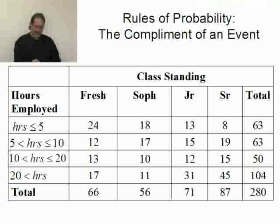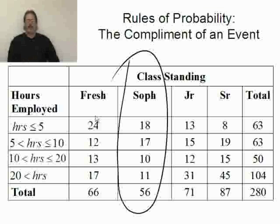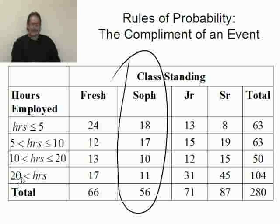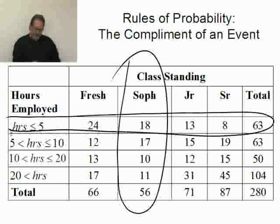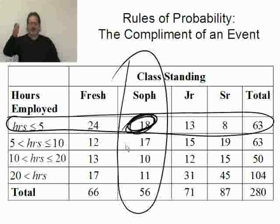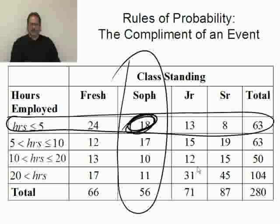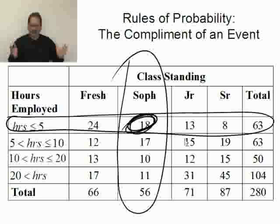So how about two events that are not mutually exclusive? If event A is sophomore, any of the row events would work. For example, worked less than five hours is not mutually exclusive with sophomore because they share 18 people — there are 18 people who were both sophomores and worked less than or equal to five hours. Any column would not be mutually exclusive with the rows unless you had a zero there, because then they still wouldn't share anything.